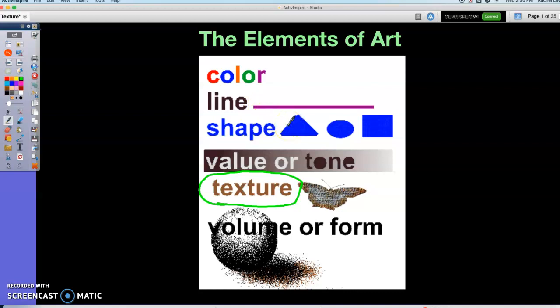Shapes, we have geometric shapes like triangles and ovals and squares, or organic shapes like shapes we find in nature, like the shape of clouds or leaves.